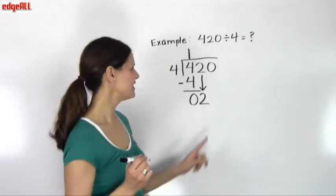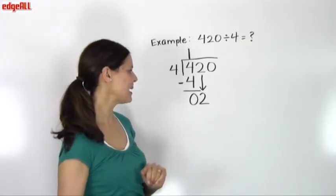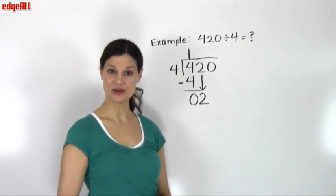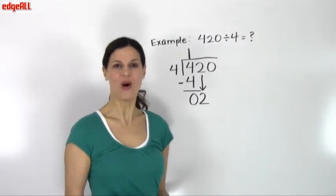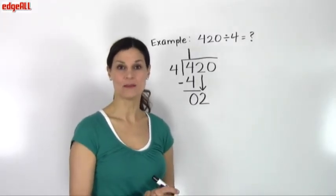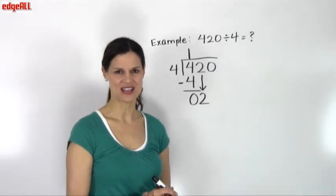Now this is where I run into trouble, the second digit here, because 2 is less than 4. I don't have a whole number that I can multiply by 4 to get an answer less than or equal to 2.